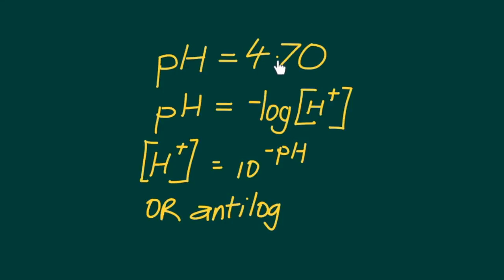Let's begin by looking at the data given: pH 4.70. Using this value we can determine the concentration of hydrogen ions in the equilibrium mixture of the acid.